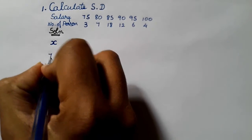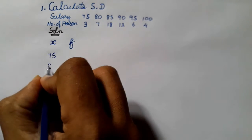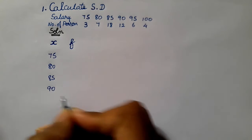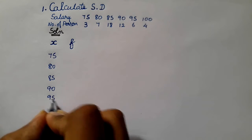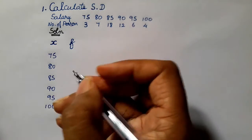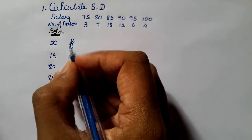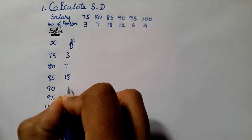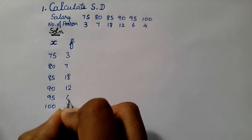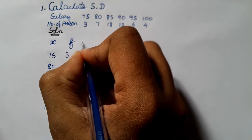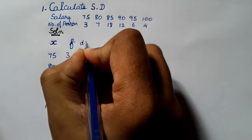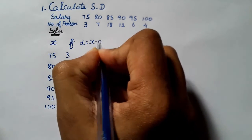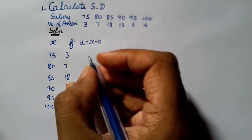Now let's look at the standard deviation. The number of frequencies are 3, 7, 18, 12, 6, 4. D is equal to x minus a, where a is the assumed midpoint.